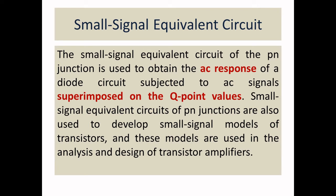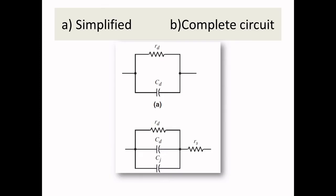Now we will see how to add capacitance in the small signal model of the diode. There are two circuits: one simplified and one complete. In the complete circuit, R_D is the small signal internal resistance used in the AC analysis of the diode. Each diode is represented by R_D in the small signal analysis. You also have diffusion capacitance C_D and junction capacitance C_J. In the simplified version, C_J is removed because its value is very low, and only C_D is kept. This is only for forward bias, where both C_D and C_J exist, but we consider only C_D.